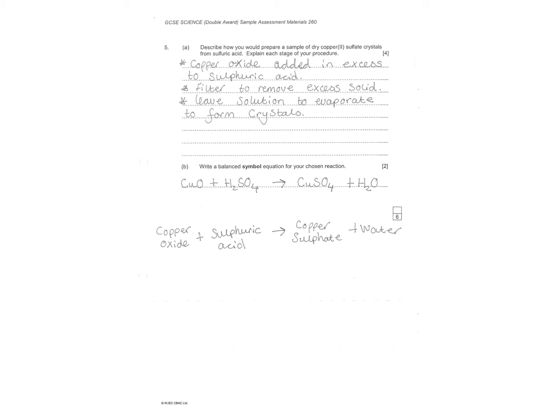Explain how you prepare a sample of dry copper sulfate crystals from sulfuric acid. Explain each stage. Nice question. Copper oxide added in excess. Ensure acid slash alkali are neutralized. You'll see an excess formed. Remove the excess solid by filtering. Leave the solution to evaporate to form crystals. Removing the water. Balance symbol equation between your chosen. It didn't say whether to use copper oxide or copper carbonate. That's up to you. I did copper oxide plus sulfuric acid. Gives me copper sulfate plus water. I then needed to write a balanced symbol equation.